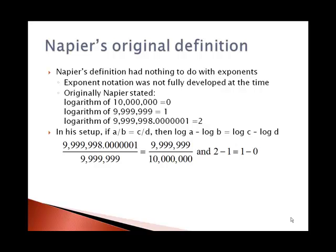And using the numbers I've given here, you can see that this is a proportion: 9,999,998.000001 over 9,999,999 equals 9,999,999 over 10 million. And if you subtract their logarithms, 2 minus 1 is the same as 1 minus 0.